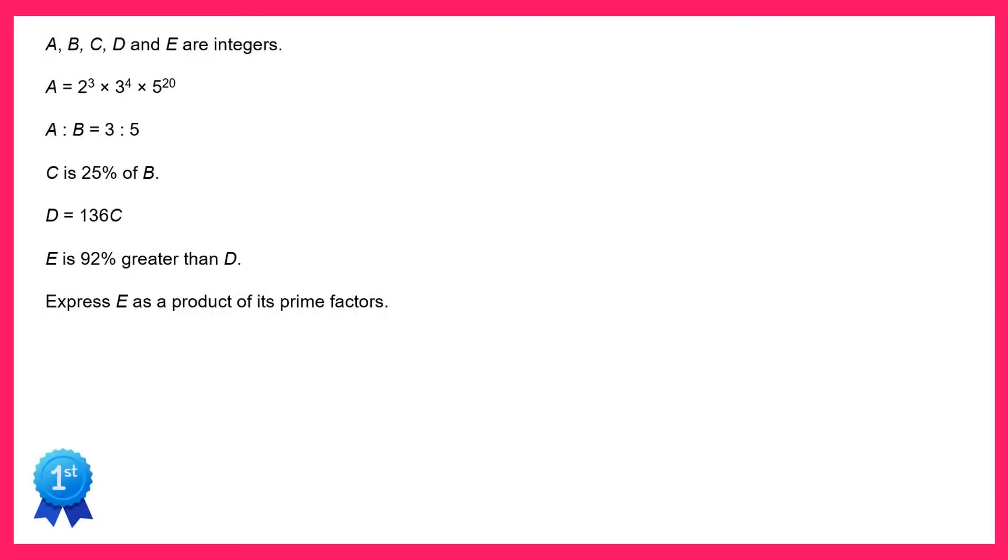Hello and welcome to the solution video for spicy question number seven. In this question we're told the ratio of A to B is equal to 3 to 5. This means to find B we just need to do 5 thirds of A.